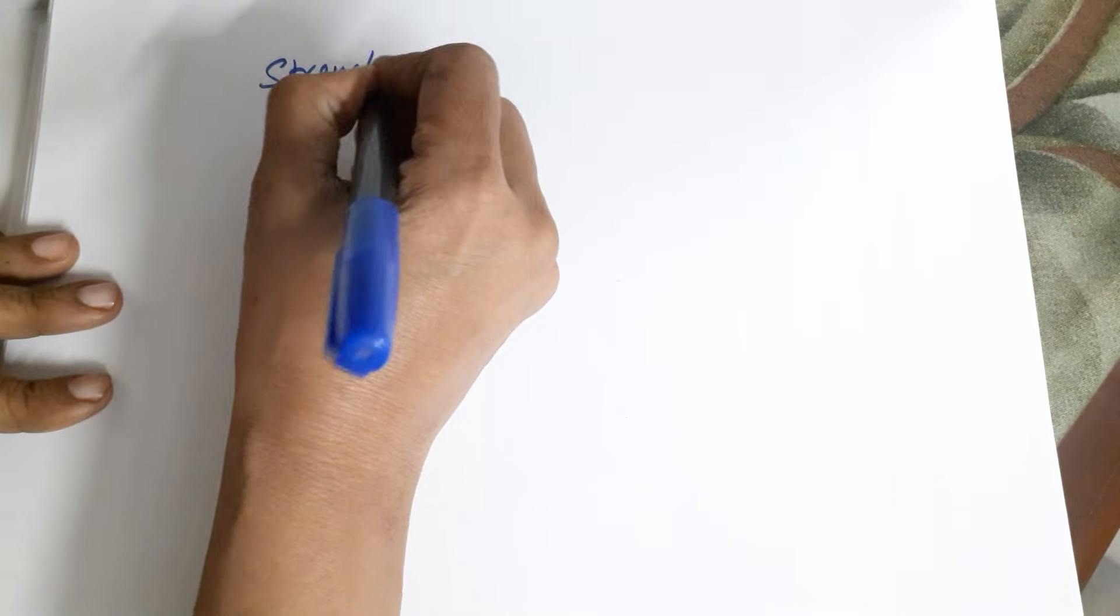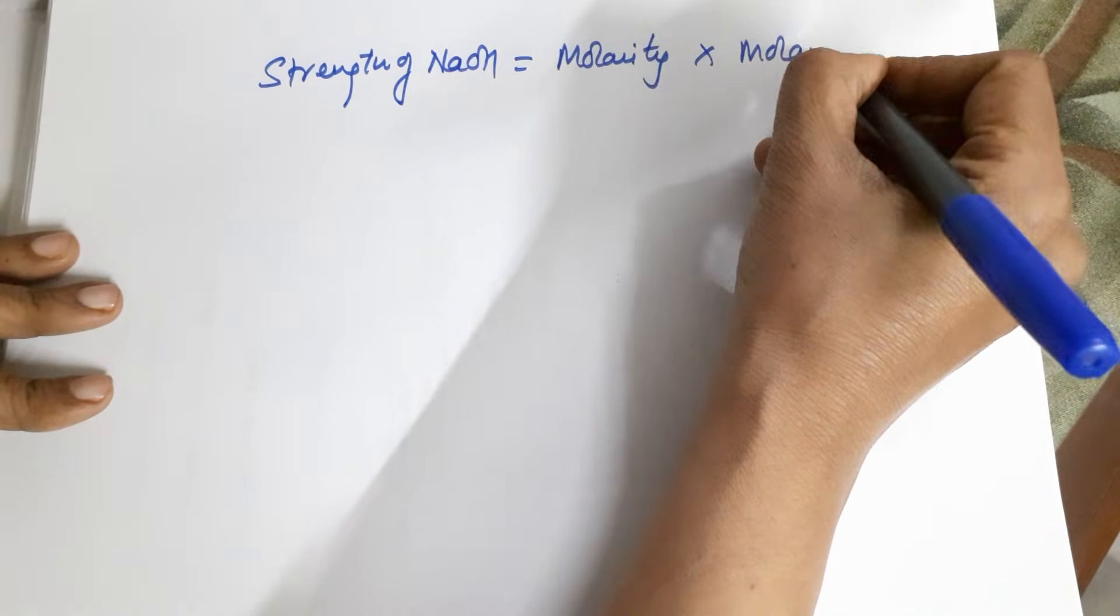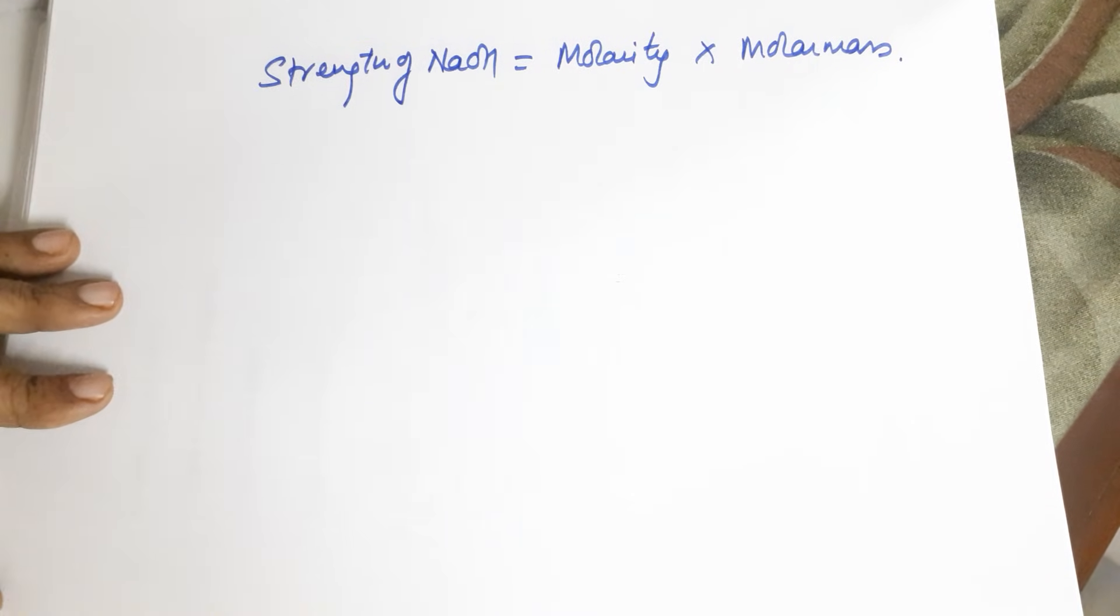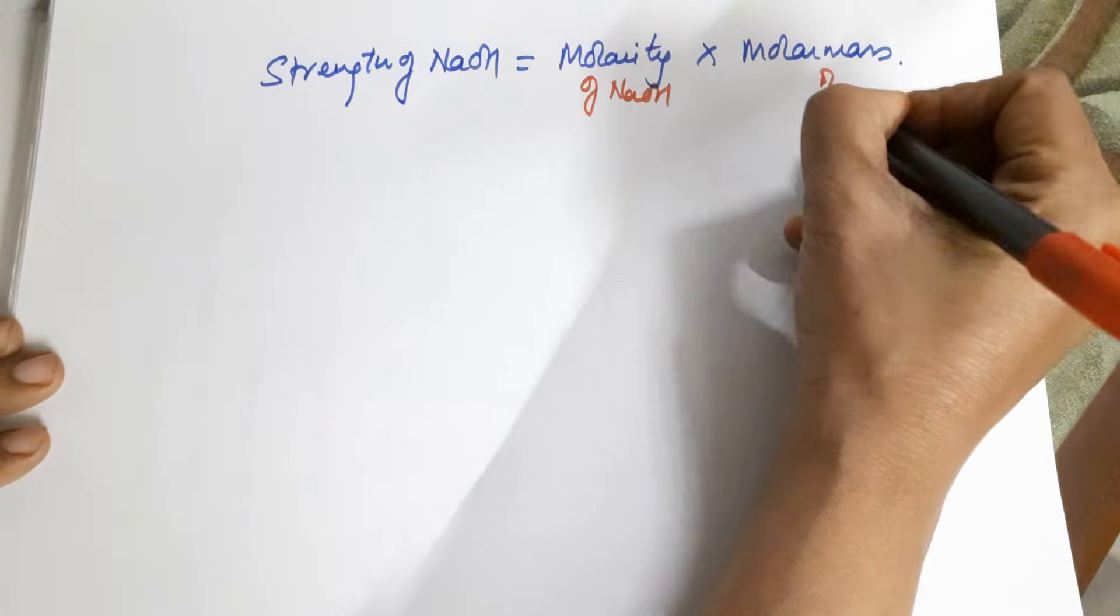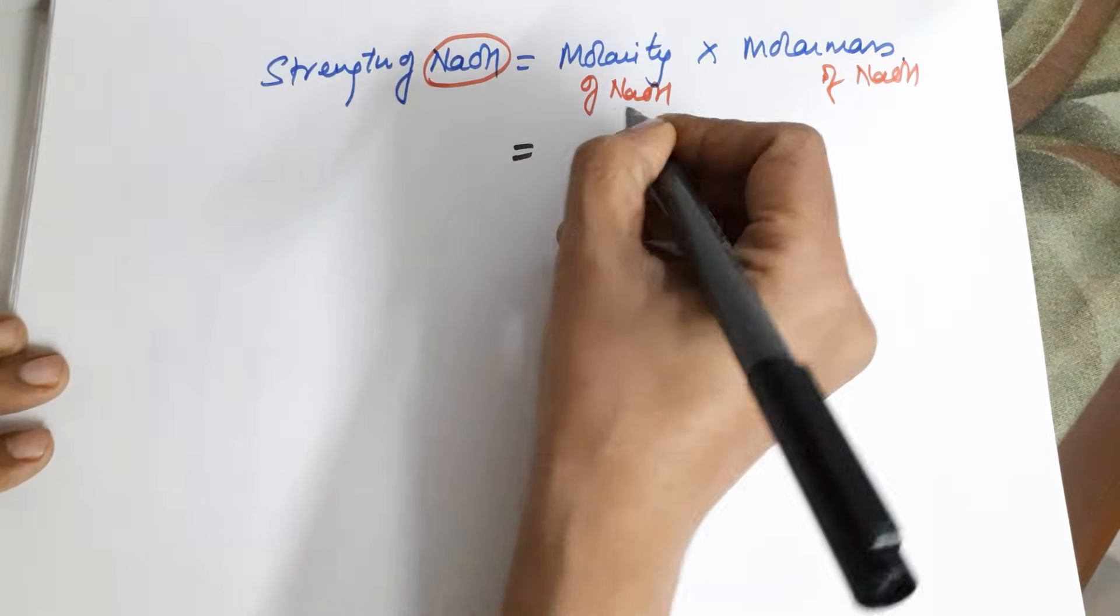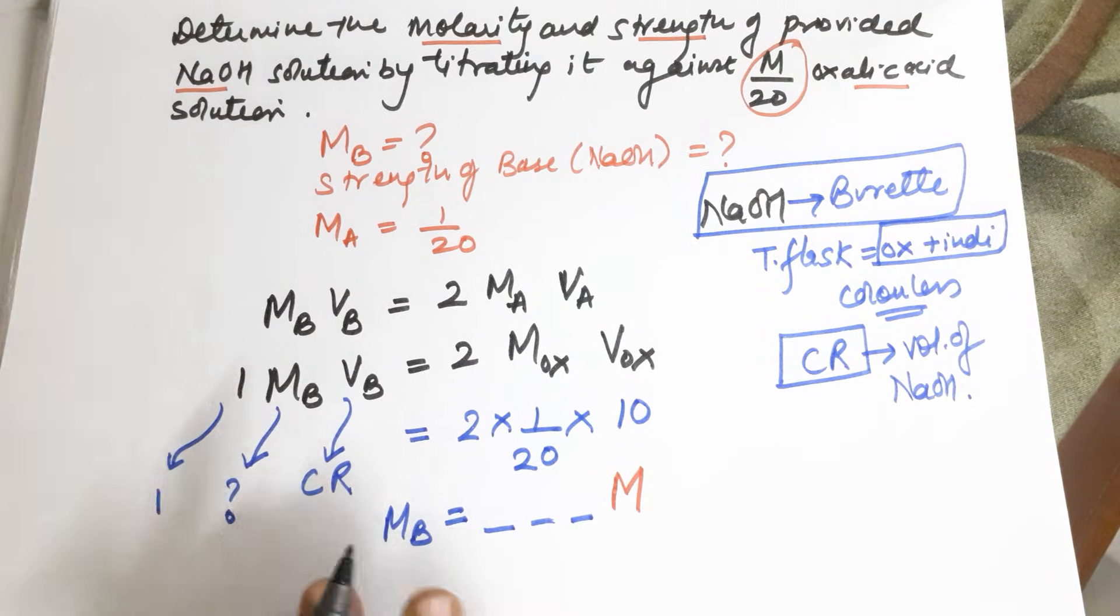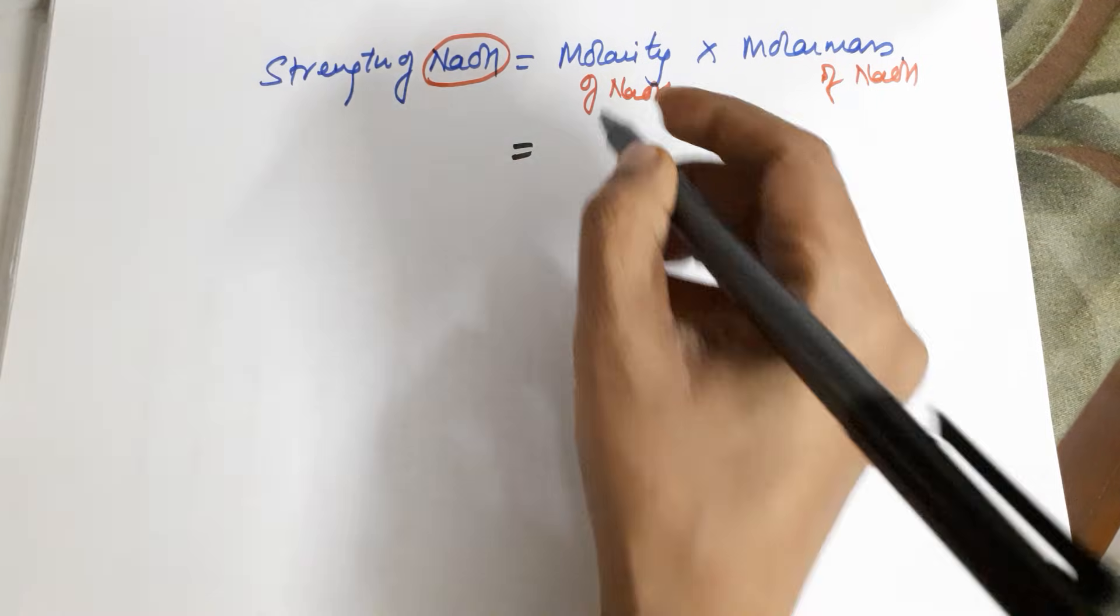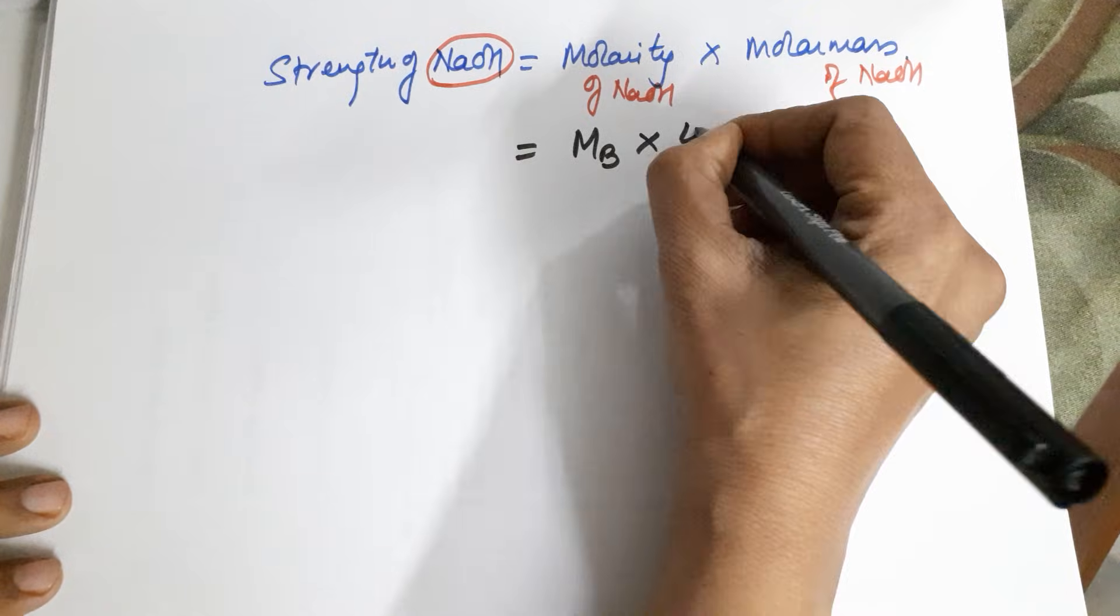Once you are done with the molarity section, you are still left with the strength of NaOH. The formula for strength is equal to molarity into molar mass. Now this is the place where students generally make an error because you do not write molarity of NaOH times molar mass of NaOH correctly. The molarity of NaOH is the molarity of the base which you have just calculated, and the molar mass of NaOH is equal to 40.